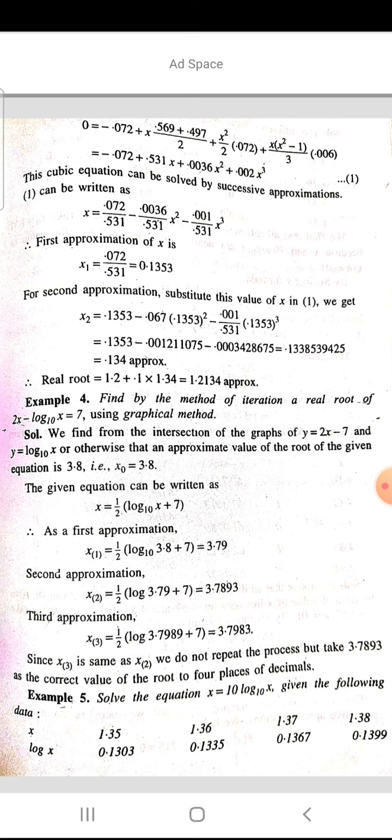Substituting values, we get 0 = -0.072 + 0.531x + 0.069x² + 0.002x³. This cubic equation can be solved by successive approximation. Equation (1) can also be written as x = 0.072/(0.531 - 0.001x² - 0.002x³/0.531).